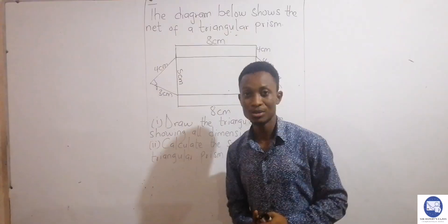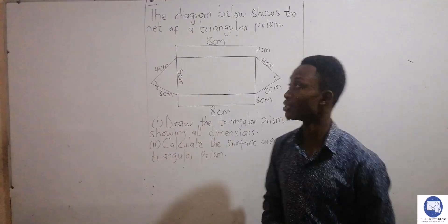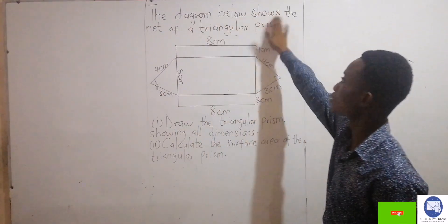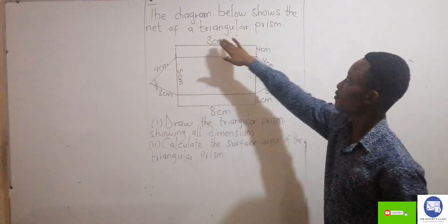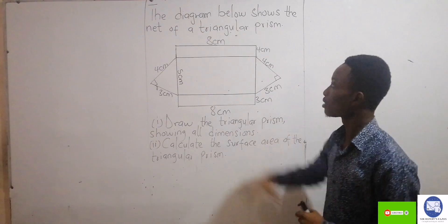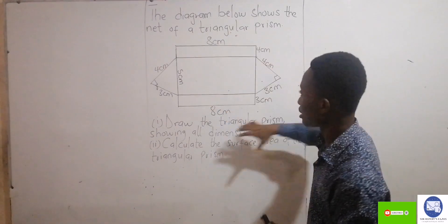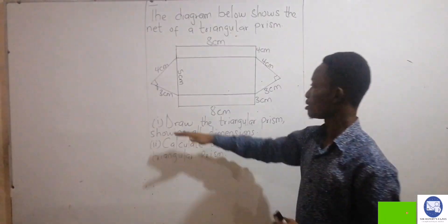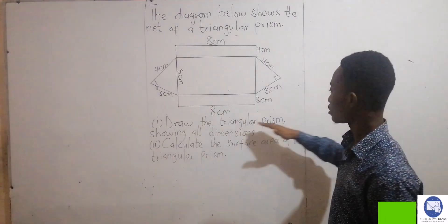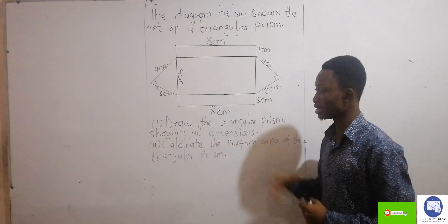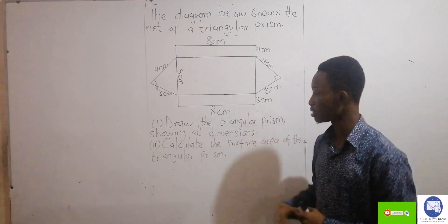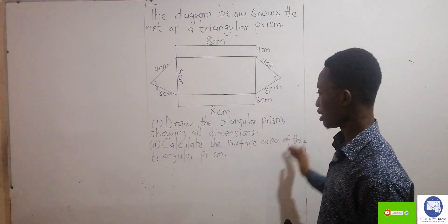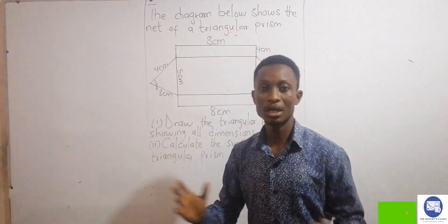We want to provide an answer to this question. The diagram below shows the net of a triangular prism. We should draw a triangular prism showing all the dimensions, then calculate the surface area of the triangular prism.